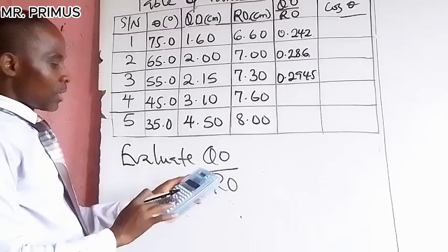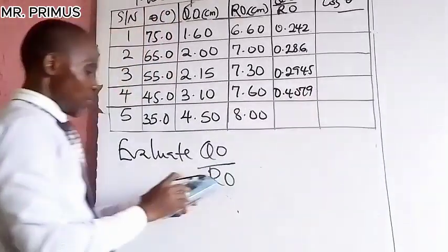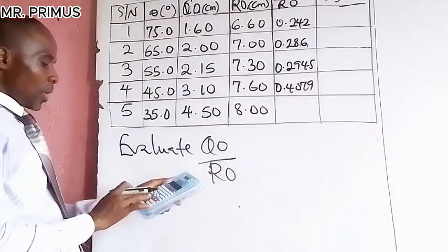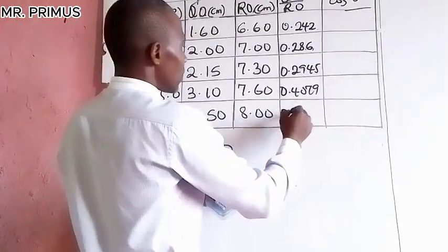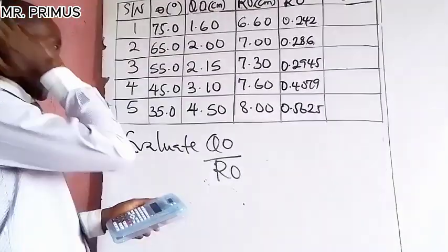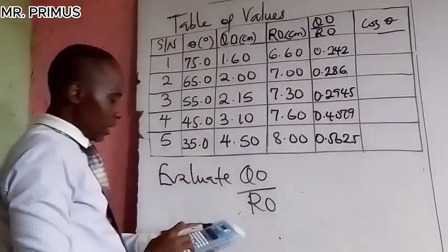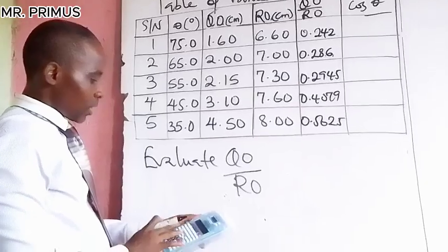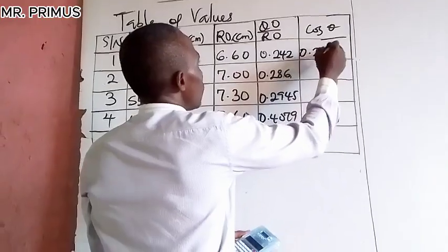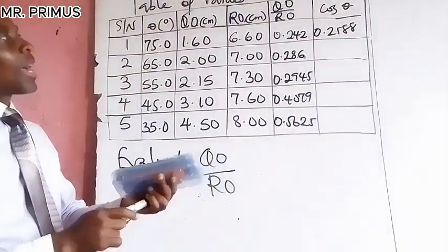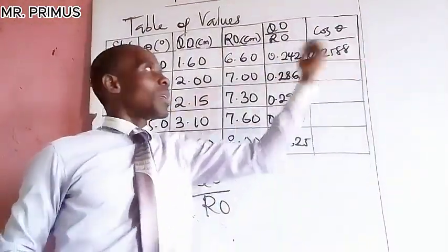Then 3.10 divided by 7.60 gives us 0.4079. Finally, 4.50 divided by 8.00 gives us 0.5625. The next thing we have to do is find the cosine of theta for each angle. So cos(75°) gives us 0.2588.